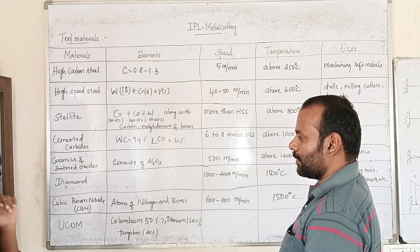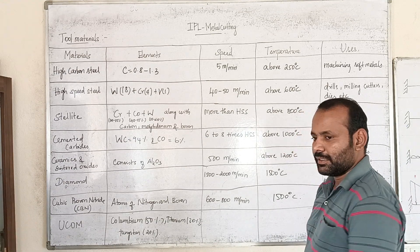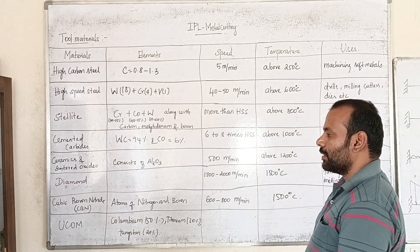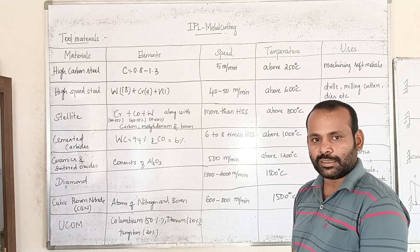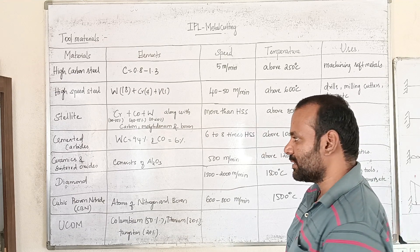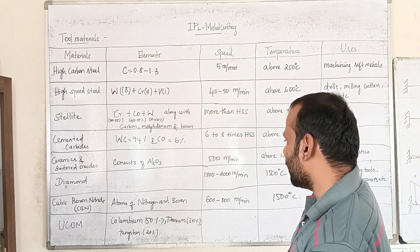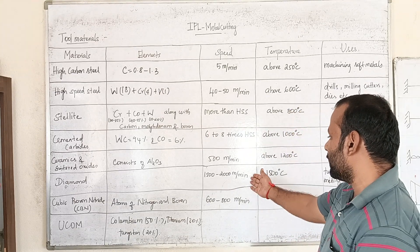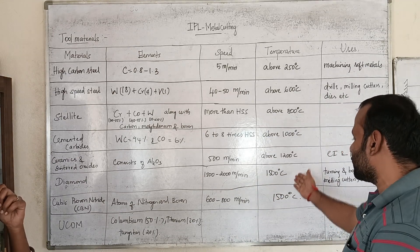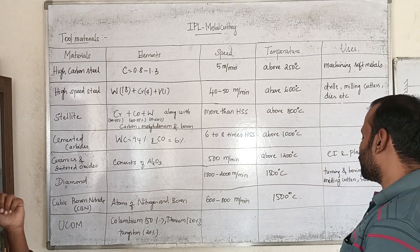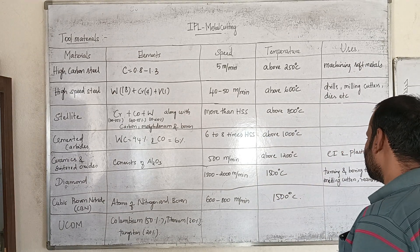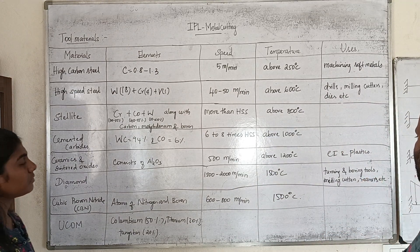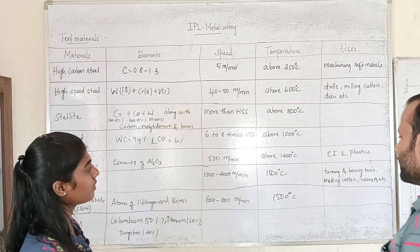Diamond has high thermal resistance. The thermal expansion is low. It is small in size and fast. The thermal expansion speed is about 120 meters per minute. The temperature is about 1500 degrees Celsius. The thermal restriction is low and it is used for reaming and covering tools.